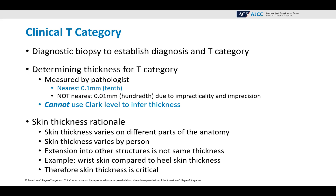The rationale for not using Clark level is that skin thickness varies on different parts of the anatomy and by person, and extension into other structures is not the same as thickness. For example, think about your wrist skin compared to your heel skin thickness — very different. Therefore, skin thickness is critical, and that is why you cannot use Clark's level to decide what the thickness is.